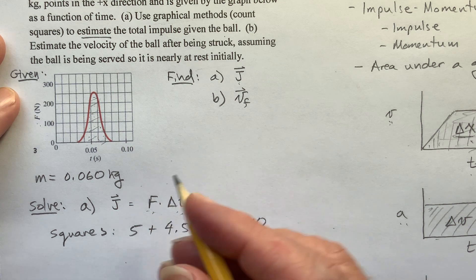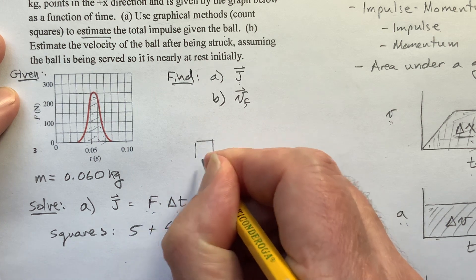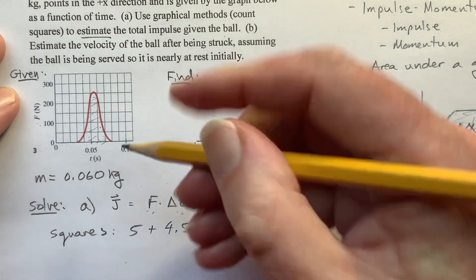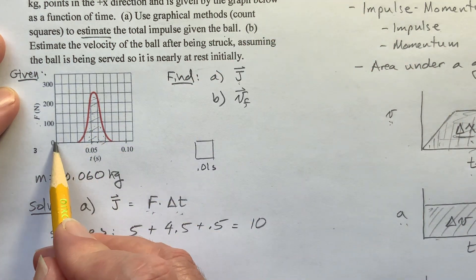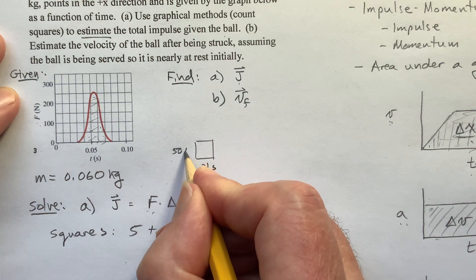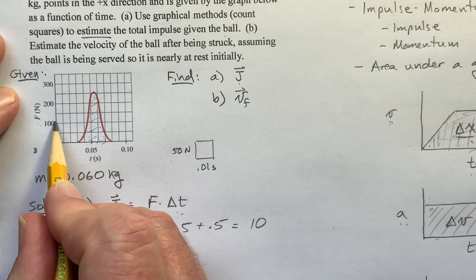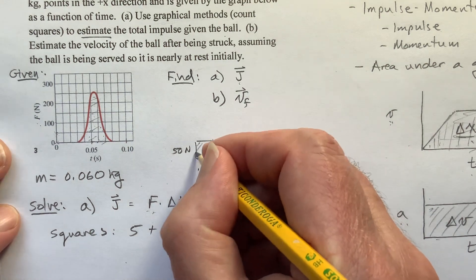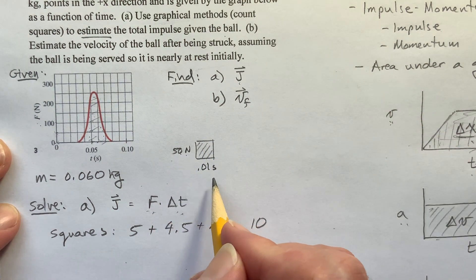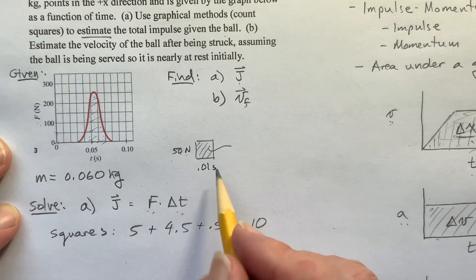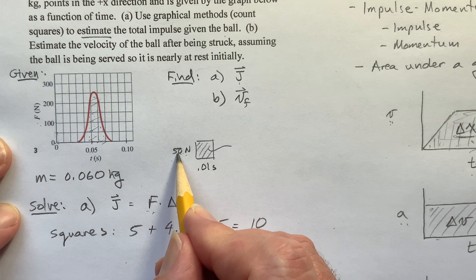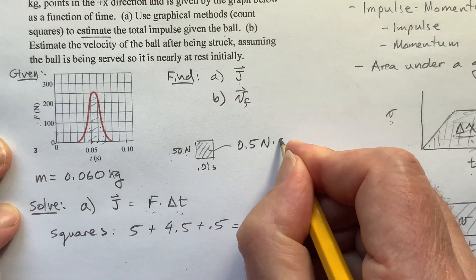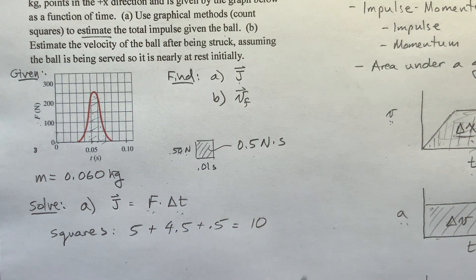Now, what does each square represent? If I look at this square, and from here to here is 0.01 seconds. And from here to here is, when I read it off the graph, this is 50 newtons. From here, this is 0. This is 100. So one square up, that's 50. So each of these little squares represents this product, 50 newtons times 0.01 seconds. Let's see. 50 times 0.1 is 5 times 0.01 is 0.5. So this is 0.5 newtons seconds for each square.